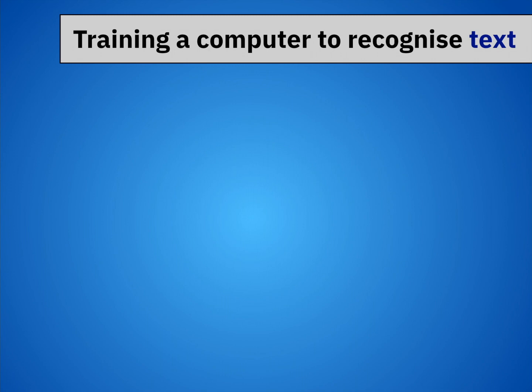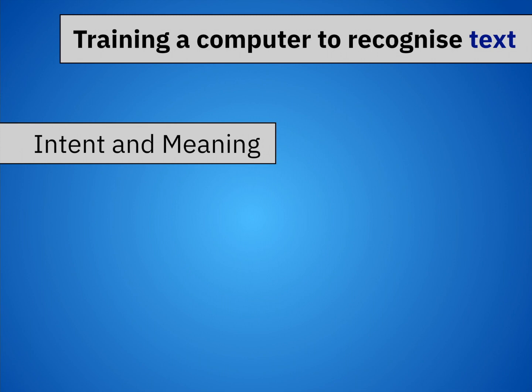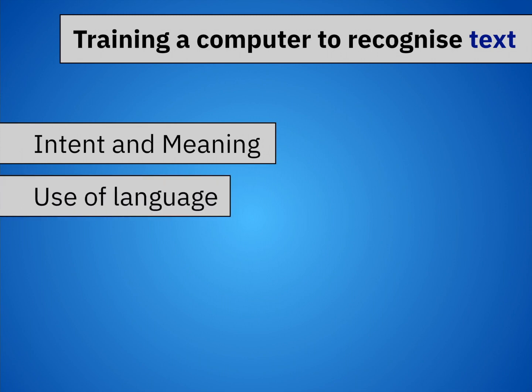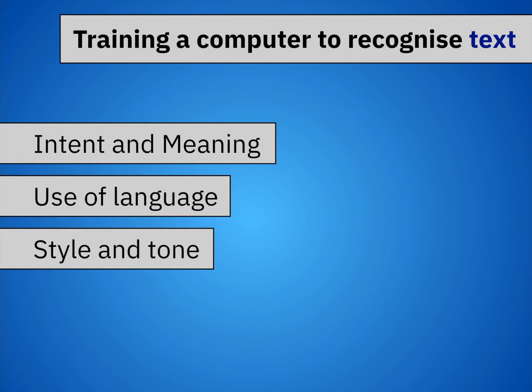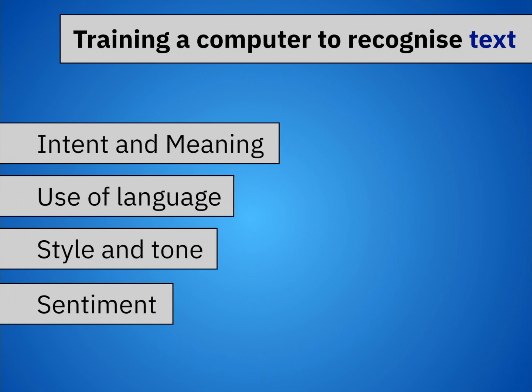So, to recap: AI means we can train a computer to recognise text — the meaning of text, the style of text, the tone, the emotion, the sentiment of text. But it doesn't just mean that, because you can also train a computer to recognise numbers.